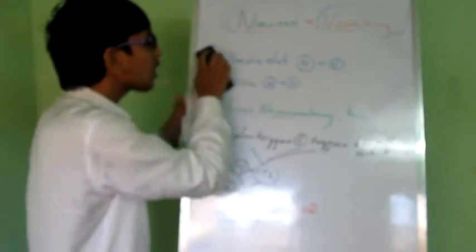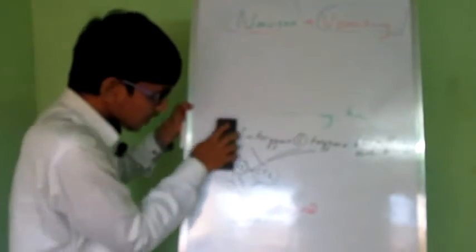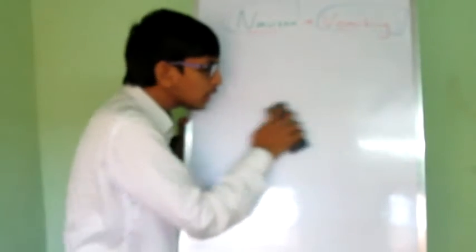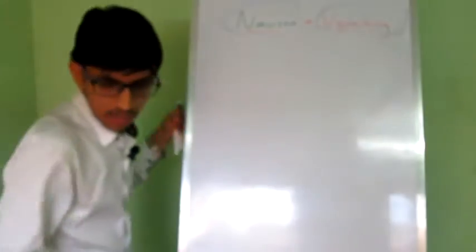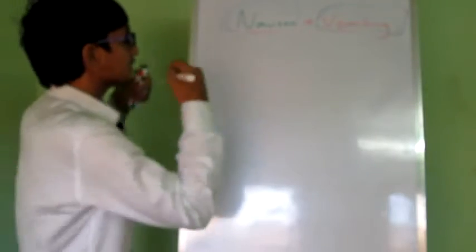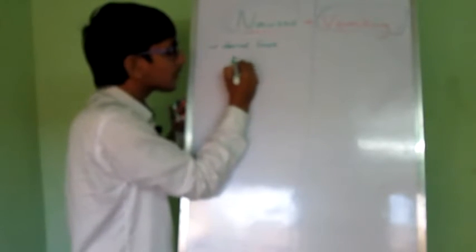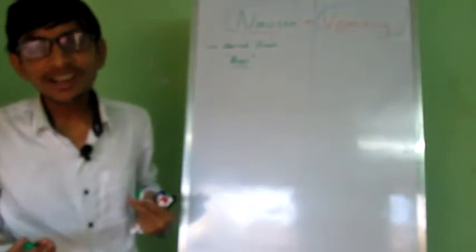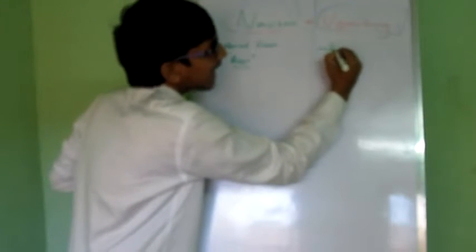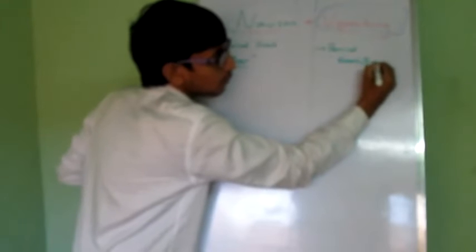Let's begin with basic definitions. First of all — do you know what nausea is? The word nausea is derived from the Greek word meaning 'boat.' Whereas vomiting is not derived from Greek — it is derived from Latin words such as 'emesis' and 'vomitorium.'